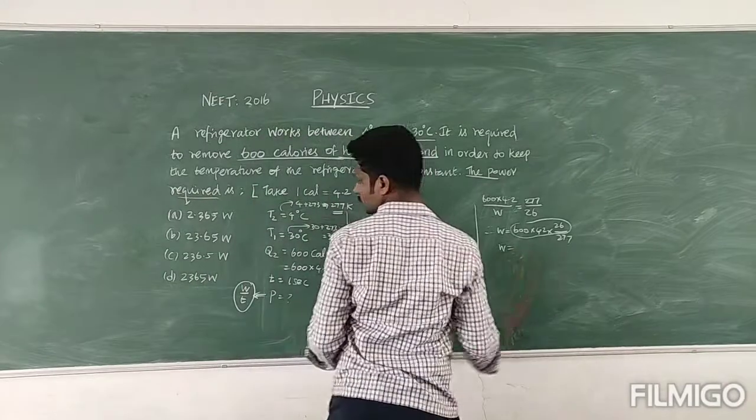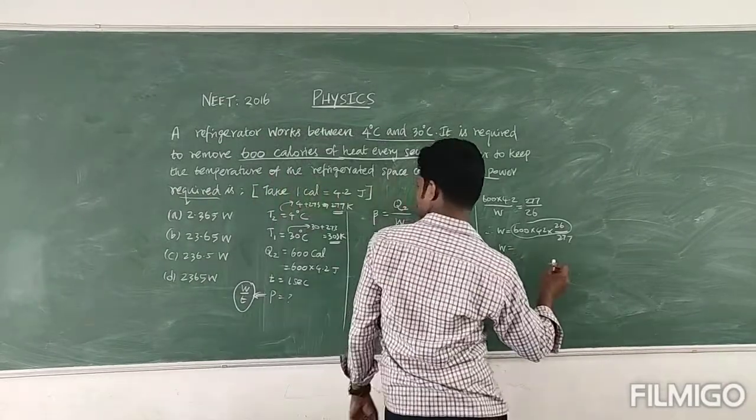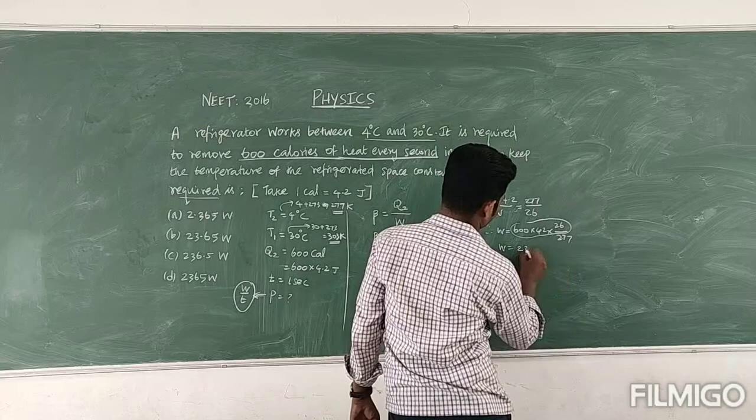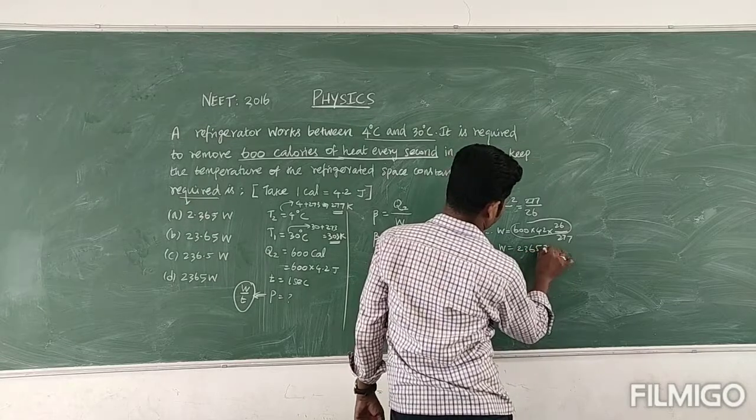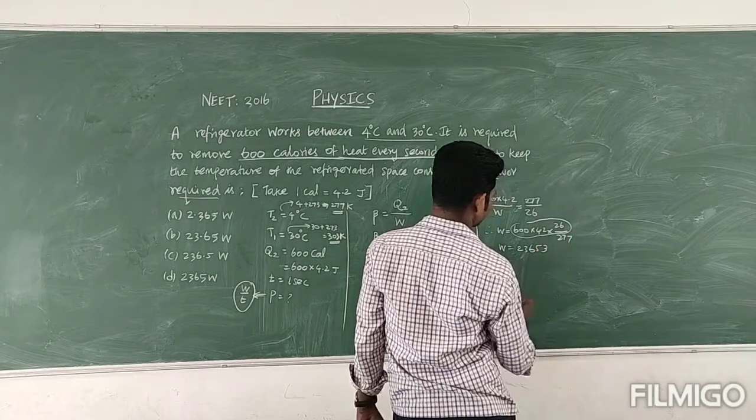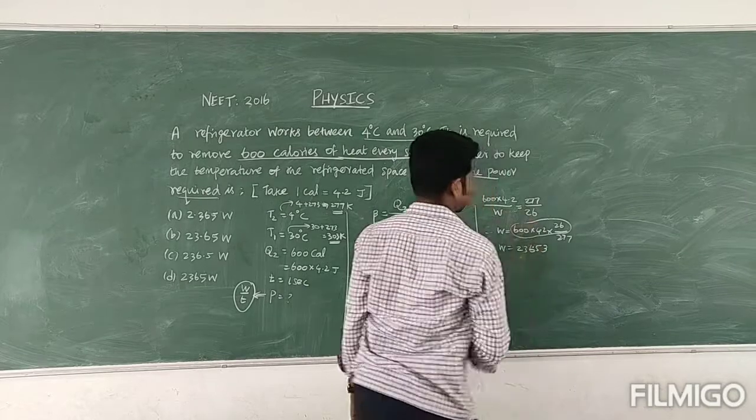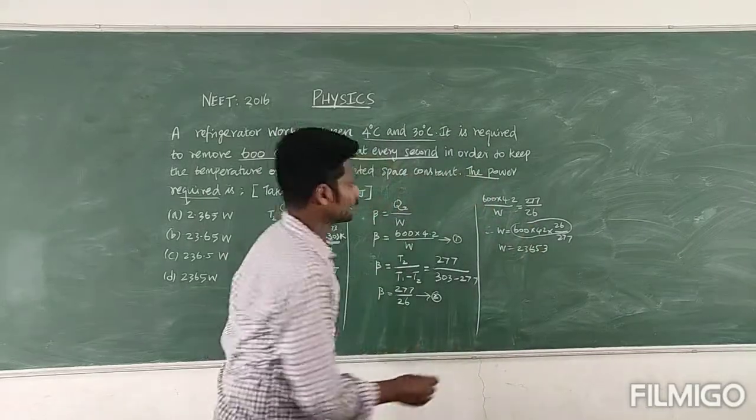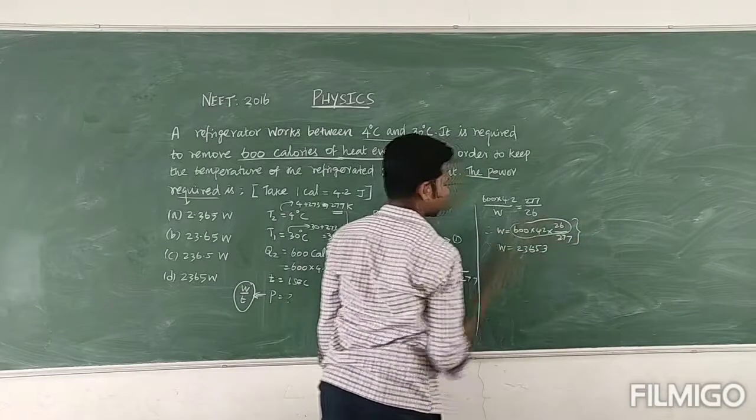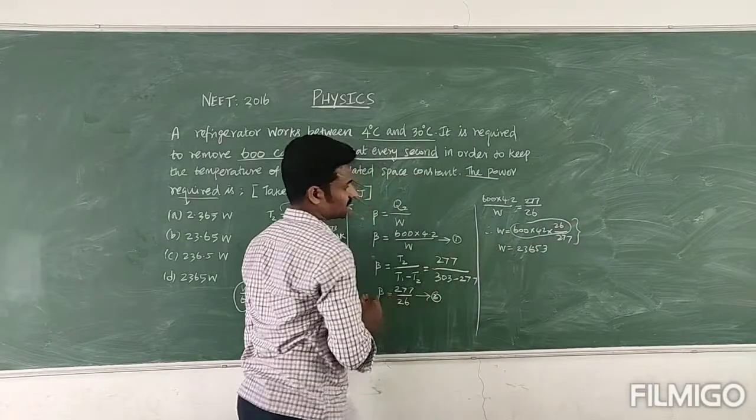Then already I calculated, so this is in contrast, that is 236.53. This is the calculated value, the total calculated value, that is 236.53. So this is the work done.